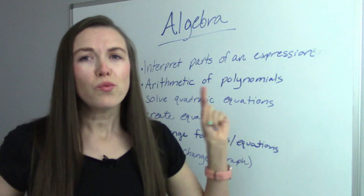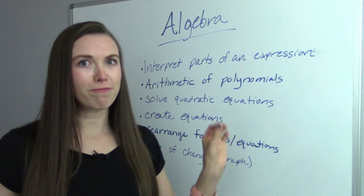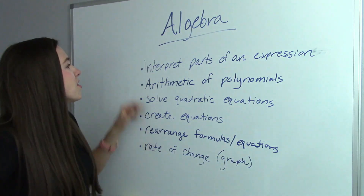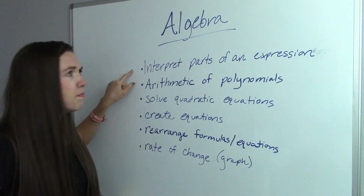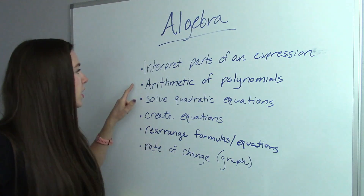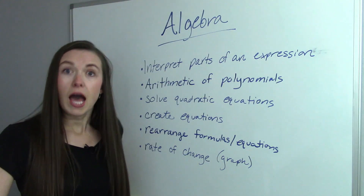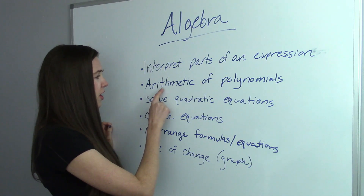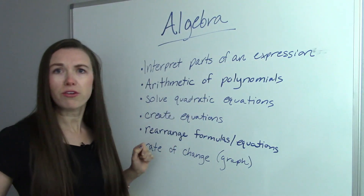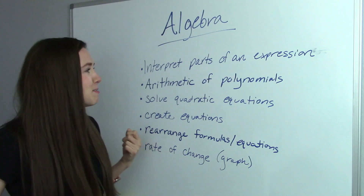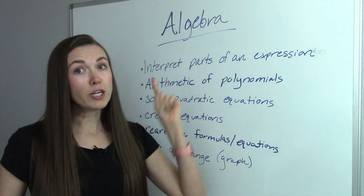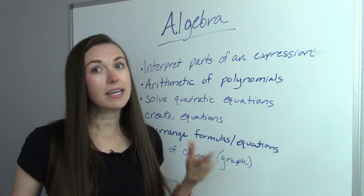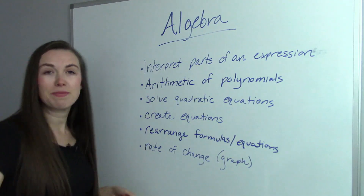First up, algebra represents 45 to 55% of the test, so if you're going to focus on anything, definitely focus on this. First, be able to interpret parts of an expression — read an expression and know what it actually means. Next is arithmetic of polynomials. For example, if you add 2A plus 3A you get 5A — that's a simple example, but that's the arithmetic of polynomials.